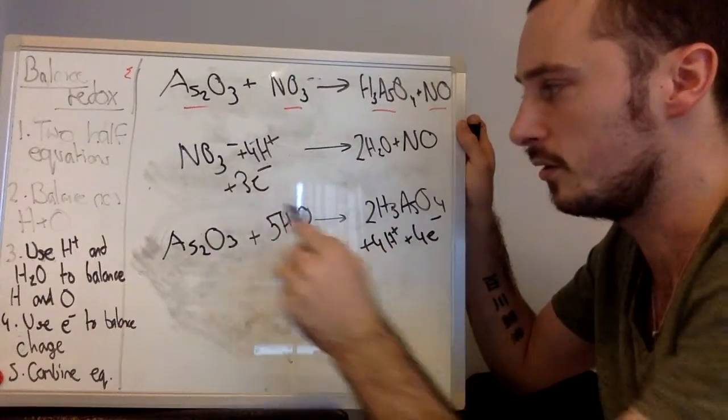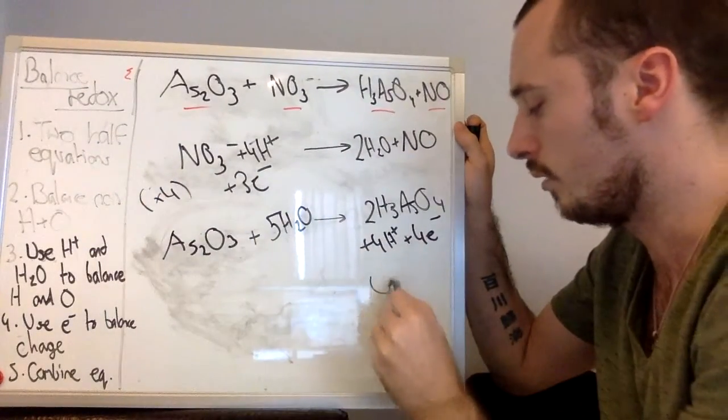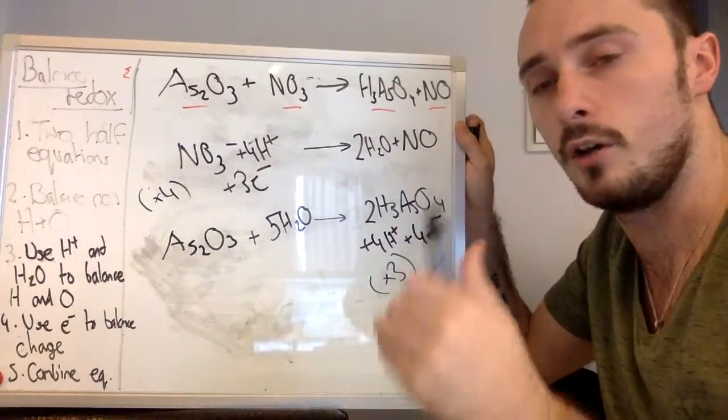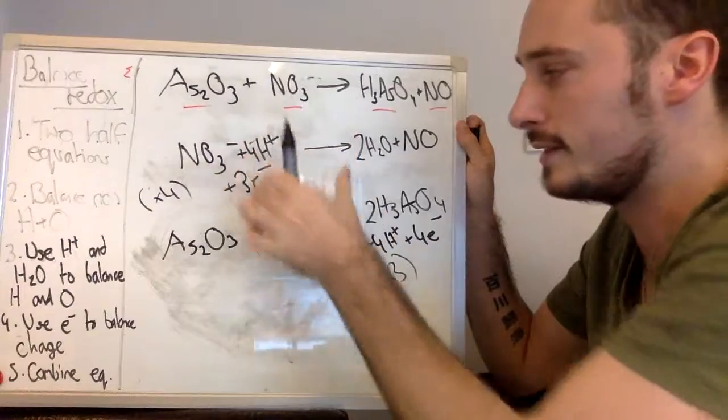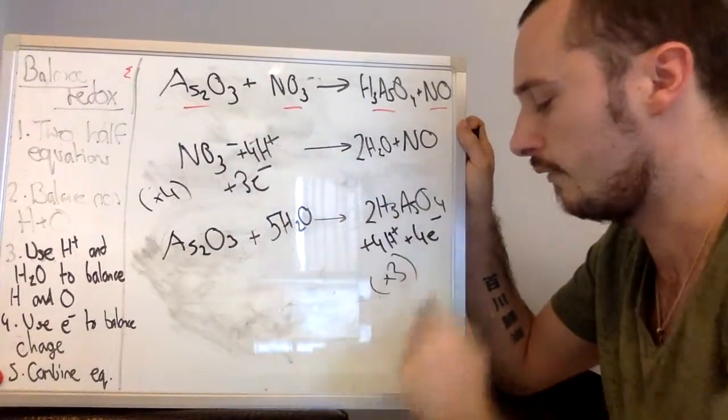So the thing which is giving out the electrons and the thing which is accepting the electrons. Let me rephrase that. The thing which is accepting the electrons, because we're doing NO3 minus plus 4H plus 3E minus, must balance the amount of electrons being given out by this reaction. As such, to balance these two, we must times this whole reaction by four and this whole reaction by three.